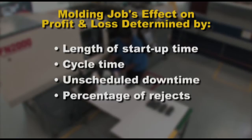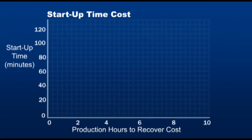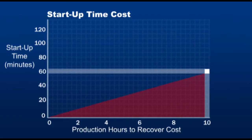Each of these four variables is estimated either directly or indirectly for every molding job. Let's begin with the cost of machine startup time. If the startup time is longer than it should be, it becomes an additional expense, reducing profit. For every extra one hour of startup time, it takes about 10 hours of producing good parts to pay for that one hour lost.